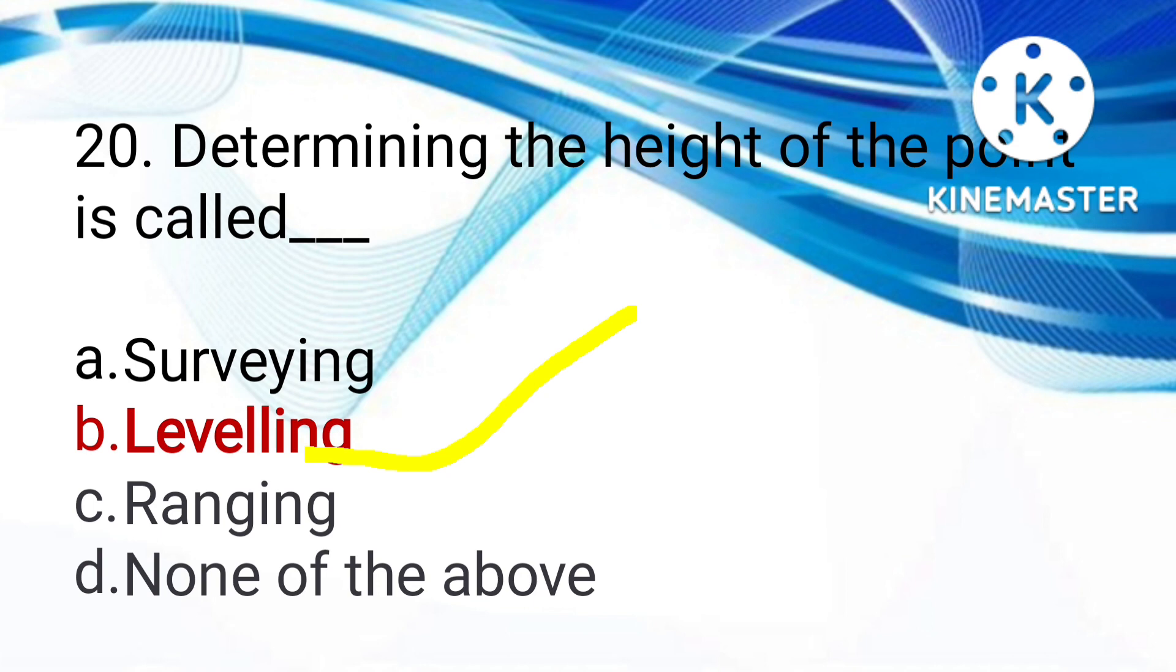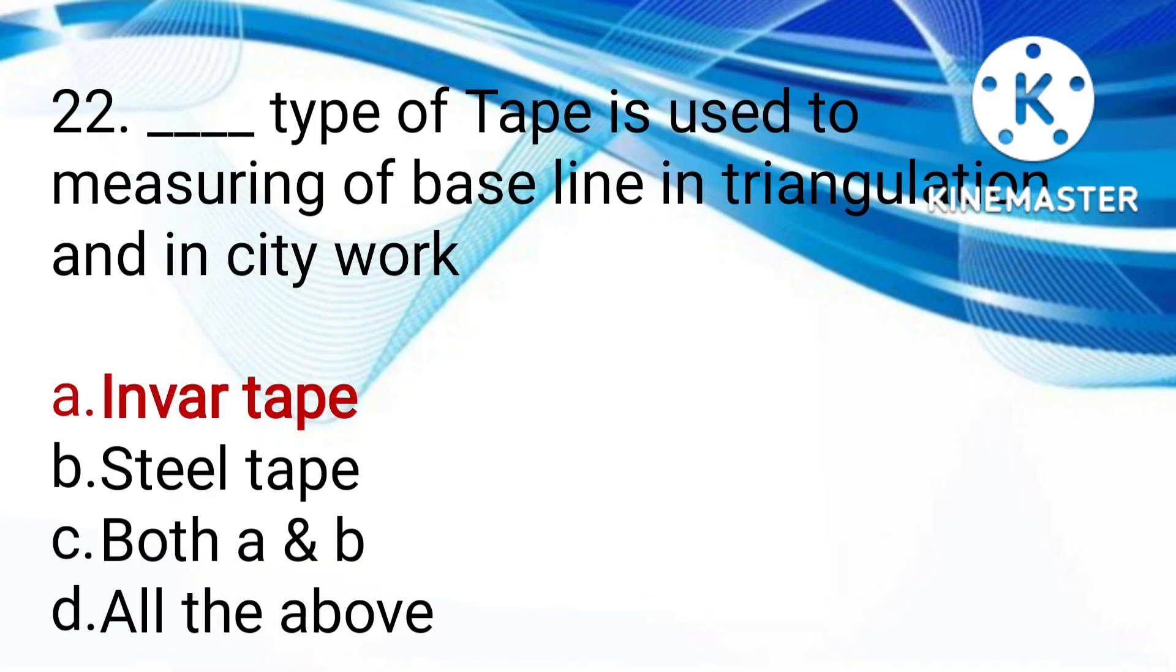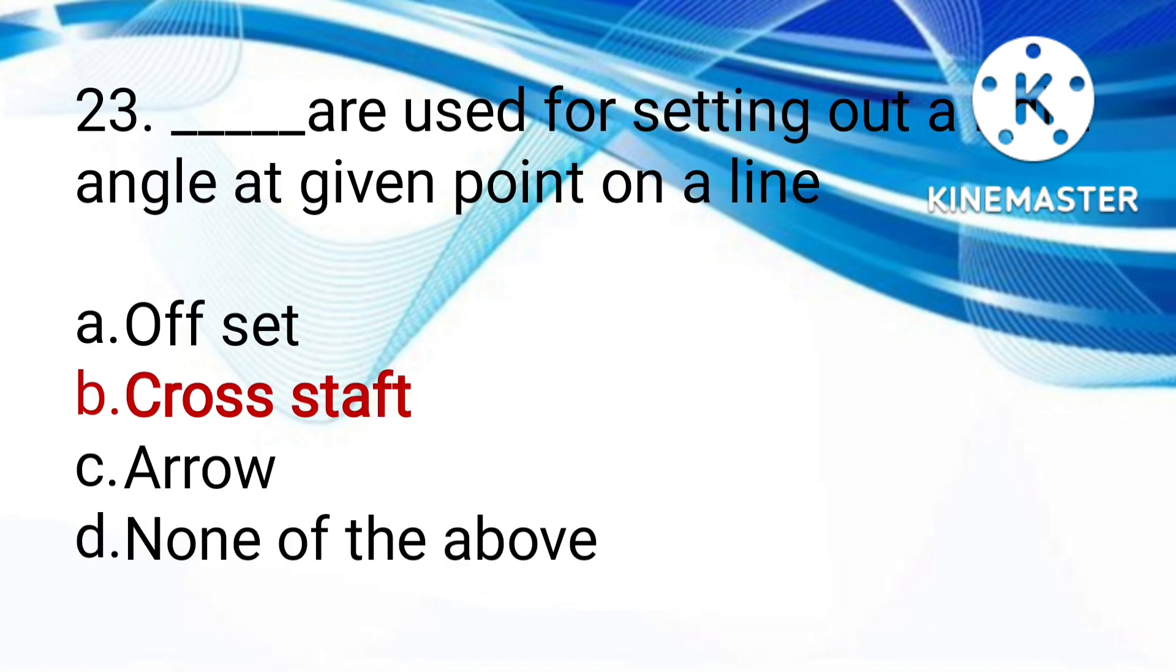If anything or any area is measured in small scale, it is called terrain, map, plan, or none. The answer is plan. Which type of tape is used for measuring the baseline in triangulation and in city work? Invar tape, steel tape, both A and B, or all of the above. The answer is invar tape. What is used for setting out a right angle at a given point on a line? Offset, cross staff, arrow, or none. The answer is cross staff.